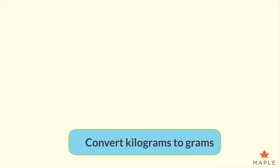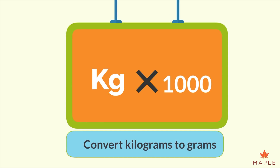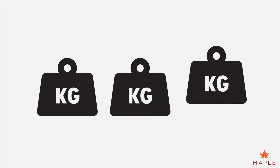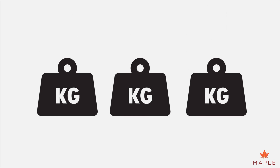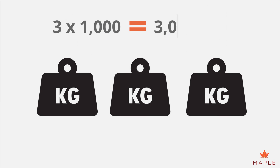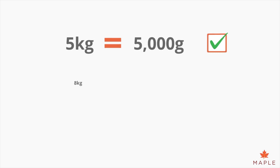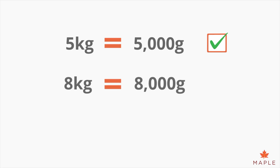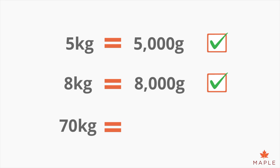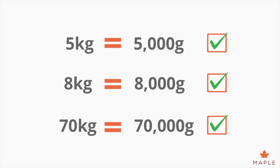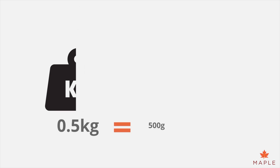To convert kilograms to grams, multiply the kilogram value by a thousand. For example, to find out how many grams there are in three kilograms, multiply three by a thousand — that makes three thousand grams. Five kilograms equals five thousand grams. Eight kilograms equals eight thousand grams. Seventy kilograms equals seventy thousand grams. If you had 0.5 kg, it is less than a whole kilogram, which would be five hundred grams.